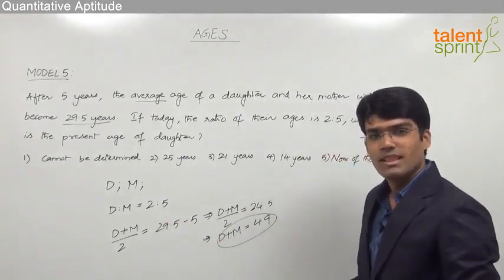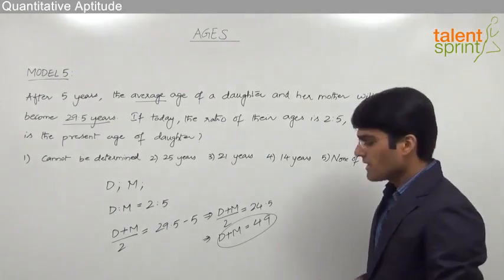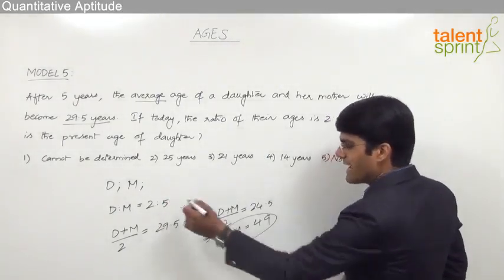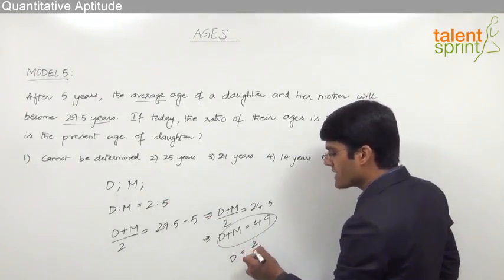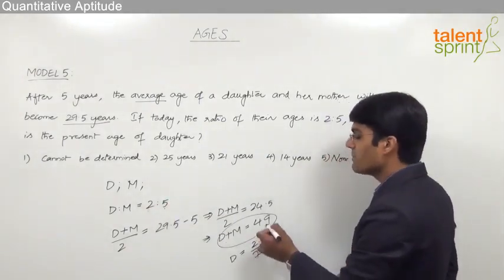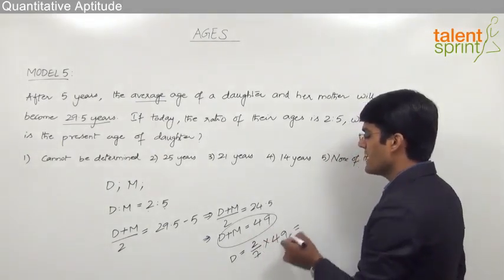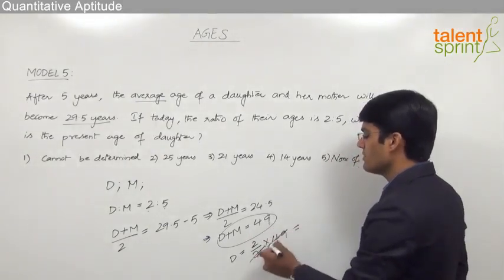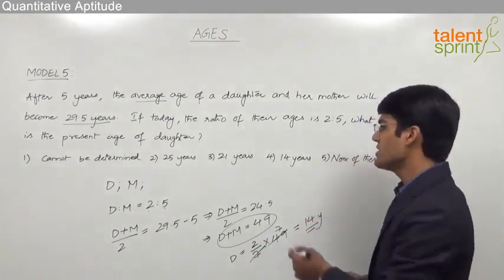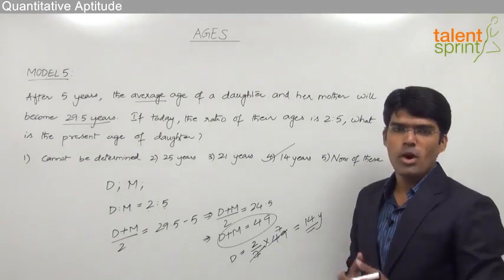Now let us find the present age of the daughter. We know the sum of their ages is 49 and we also know the ratio is 2 to 5. When the ratio is 2 to 5, daughter's age can be taken as 2 parts out of a total of 2 plus 5, which is 7 parts. So 2 by 7 into 49 equals 2 into 7, which is 14 years. Therefore the present age of the daughter is 14 years.